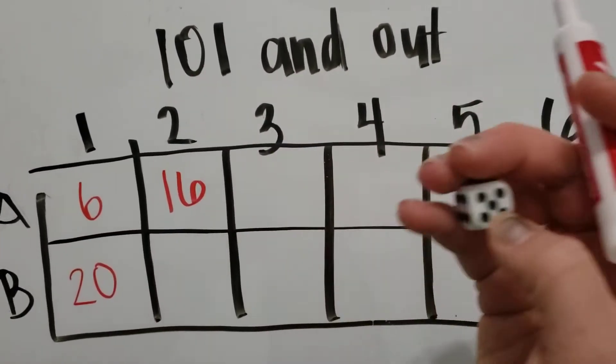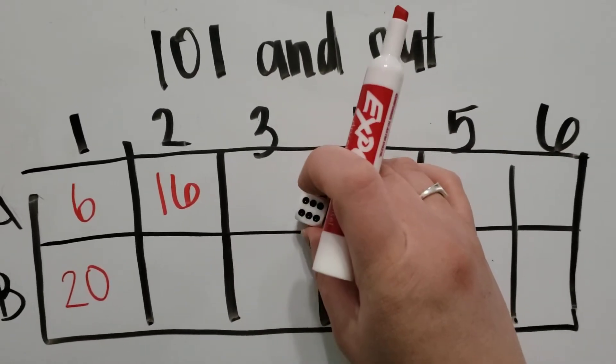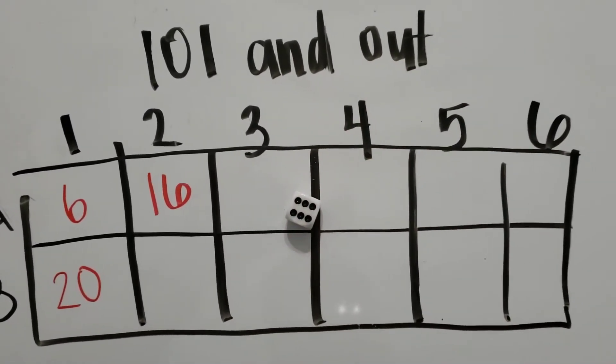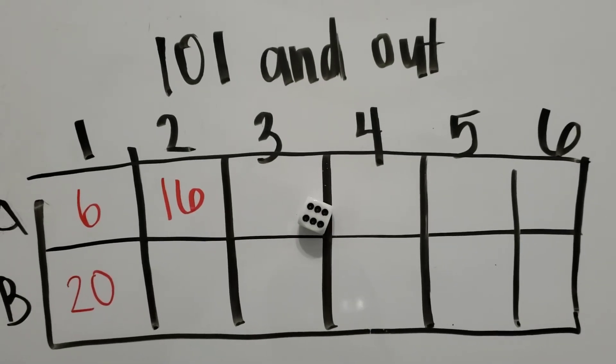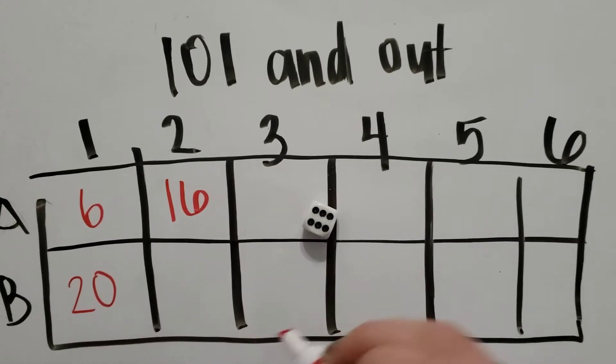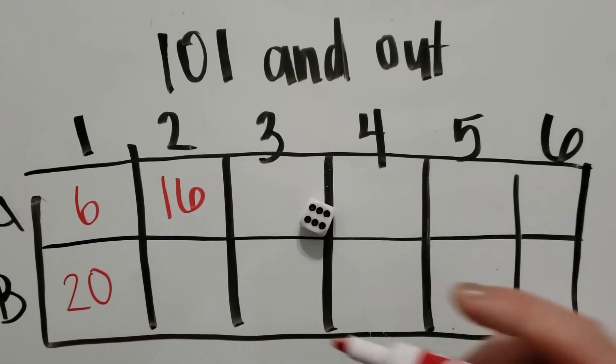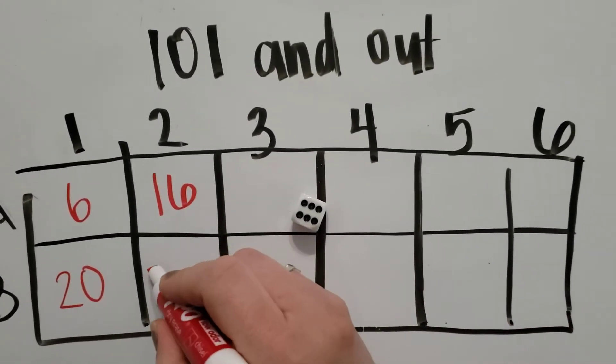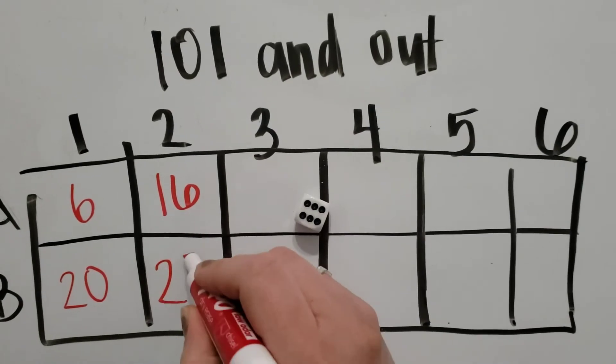And now it's team B's turn and they're going to roll the dice and they rolled a six. Now, if I made that 60, 60 plus 20 would be 80. And I still have four more rolls that I have to do. So I'm going to leave that as a six and do 20 plus six is 26.